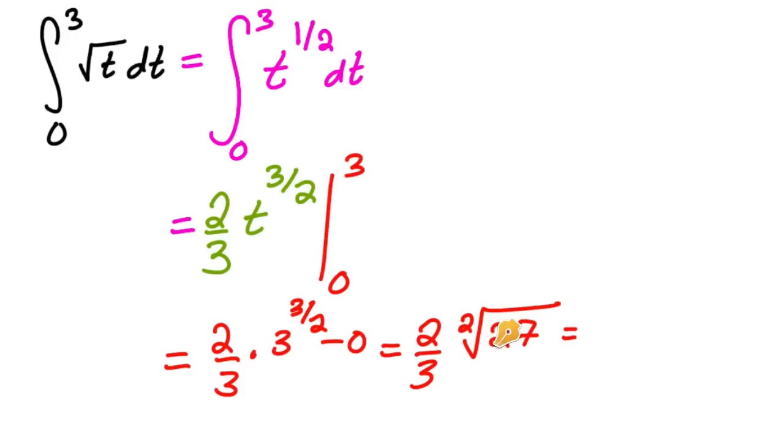You can take out a 3 from in here if you want to. So if you take out a 3, you would have 3 times 2 thirds square root of 3. And so that gets rid of those. So then this is just 2 square root of 3.